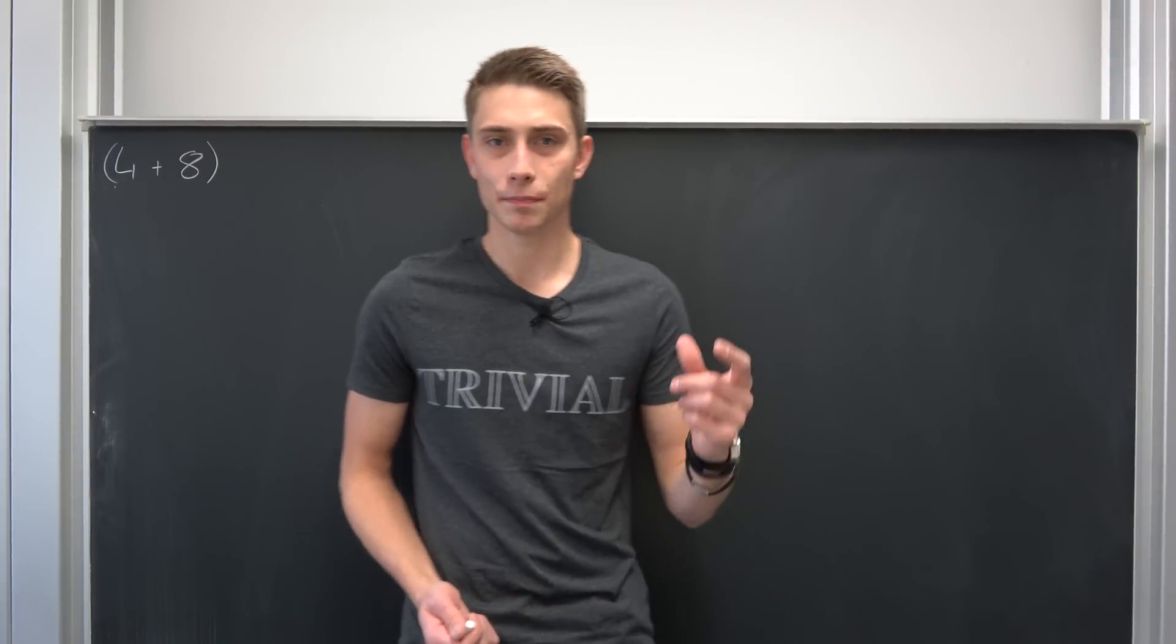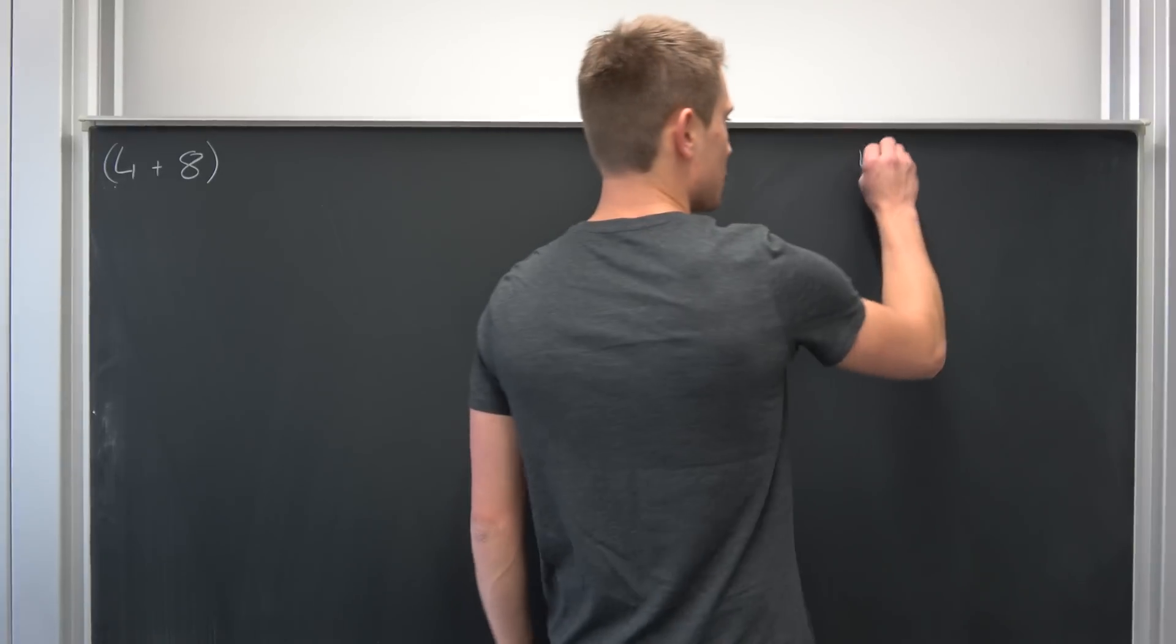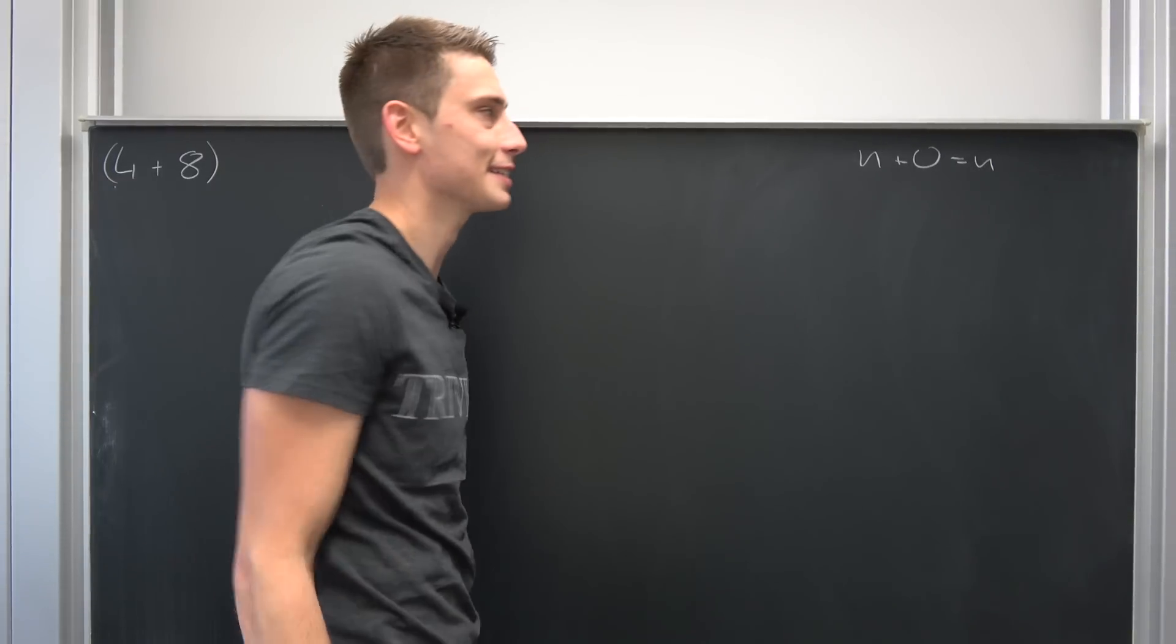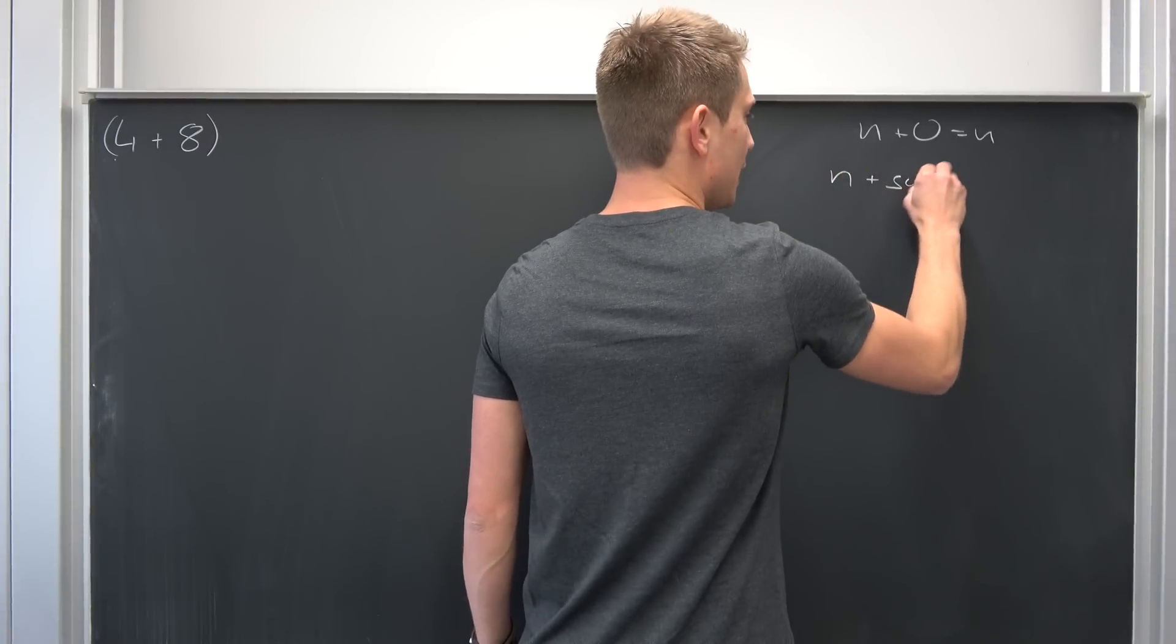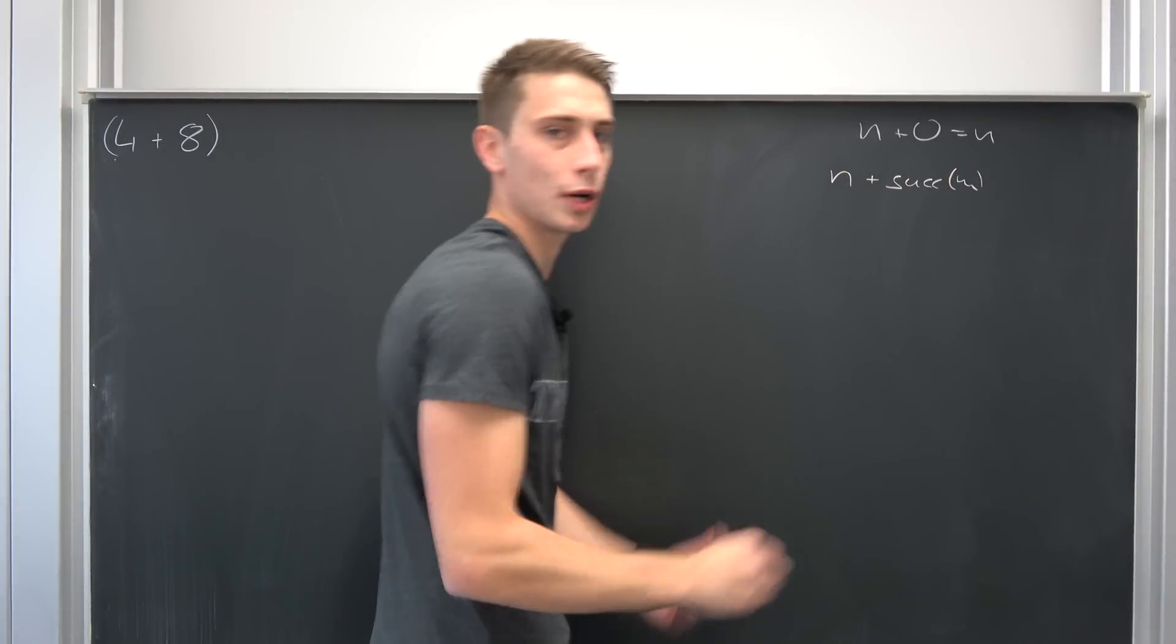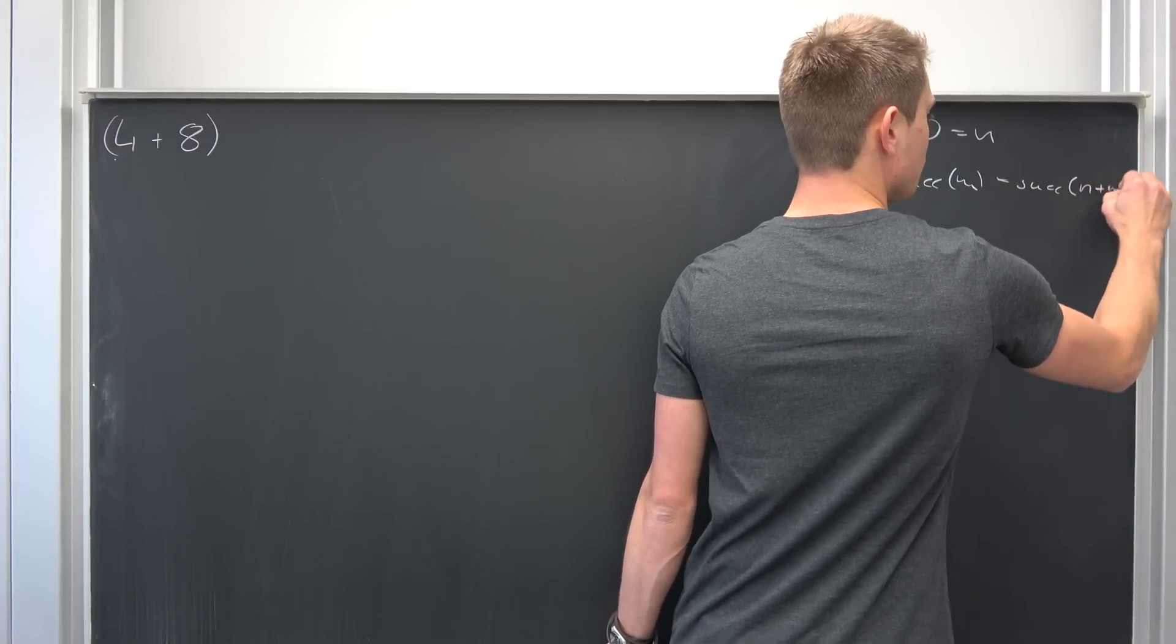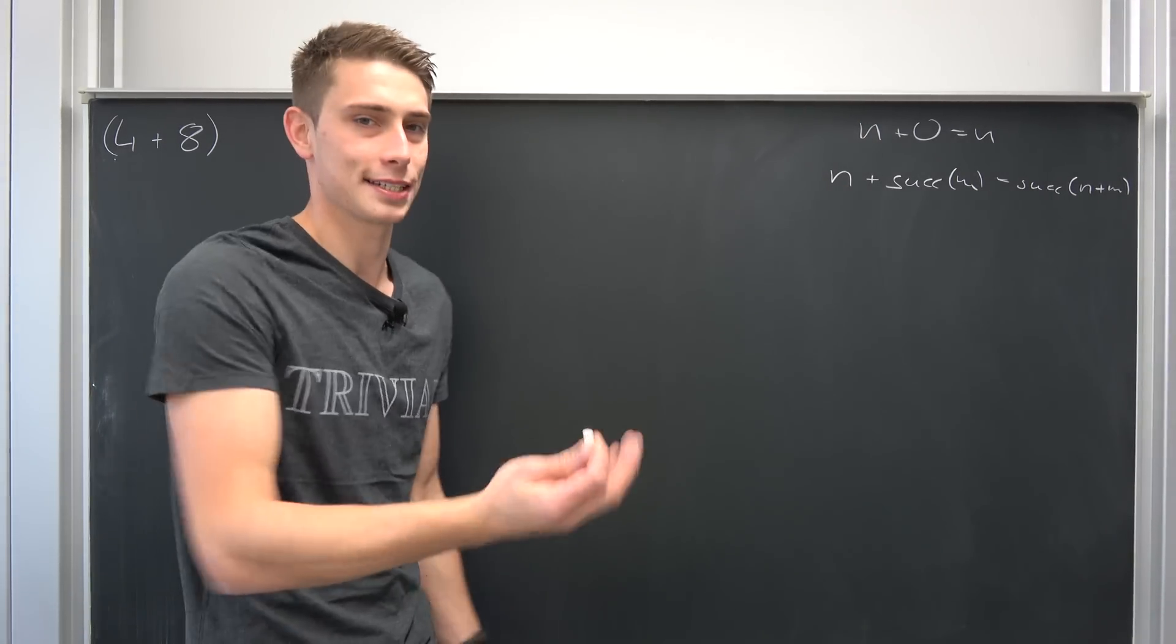So you see if we have the successor then we also have our addition which underlies two little rules. So if we take a natural number and add 0 to it, well that's just the natural number itself. It's as easy as it is. Also, if we add the successor of some number m to this number n, well this is nothing but the successor of n plus m. Well, it's just as easy as it is. It's not really hard.